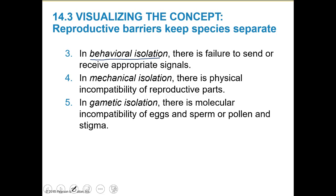We also have behavioral isolation: a failure to send or receive appropriate signals. Spiders are notorious about this, especially jumping spiders. If the male doesn't do the correct dance that the female is looking for, she'll just eat him and he'll be dead. The male has to do the appropriate behaviors or it's not going to work out. If the wrong species gets the wrong species of female, she's just like, well, you're not doing your own species any good.